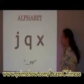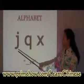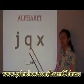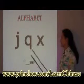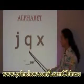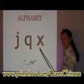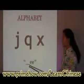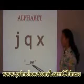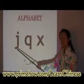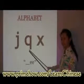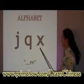And then we have J, Q, and X. These are going to sound really different from the English pronunciation. The ending sounds are in 'e' — you have to pull your mouth back and really make that sound. So you have J, Q, X.